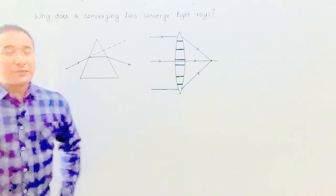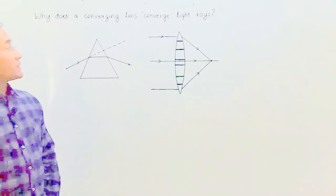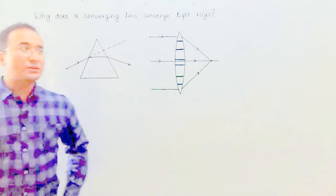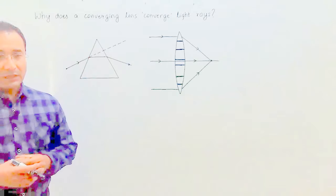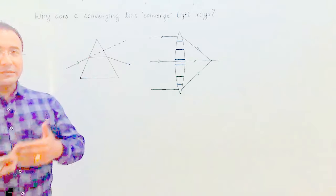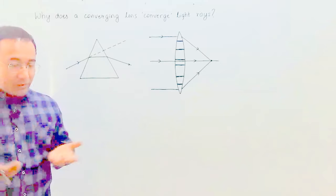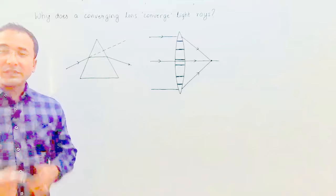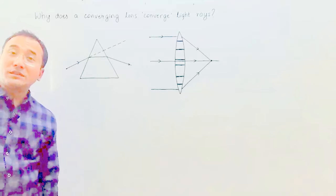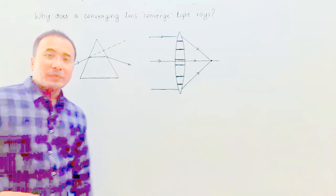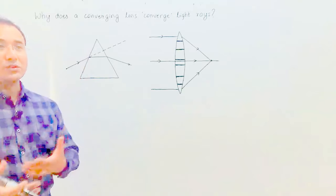Hello, today's issue is why does a converging lens converge light rays? We are often taught that a convex lens is thick in the middle and tapered at the ends, and that a converging lens converges light rays, but why does it do that?